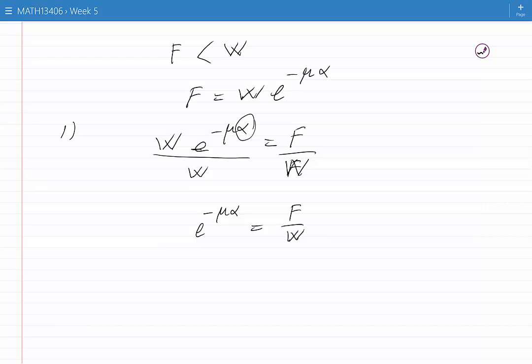Now you should look at F, W, and mu as parameters. You can think of them as numbers, for example. Then on the right hand side you would have a number, and on the left hand side you will have e to the power of a number times the unknown, which is alpha.